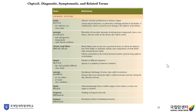Diagnostic, symptomatic, and related terms: Anuria means absence of urine production (an- means without, -uria means urine). Azotemia is retention of excessive amounts of nitrogenous compounds. Chronic renal failure (CRF) is renal failure that occurs over a period of years in which the kidneys lose the ability to maintain volume and composition of body fluids with normal dietary intake. Dysuria is painful or difficult urination. Enuresis is involuntary discharge of urine, also called incontinence. Fistula is an abnormal passage from a hollow organ to the surface or from one organ to another. Frequency is voiding at frequent intervals. Hesitancy is involuntary delay in initiating urination.